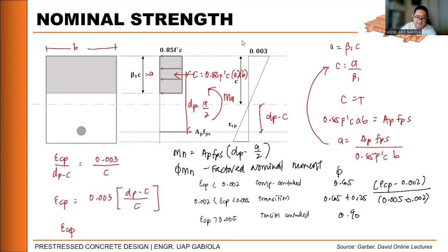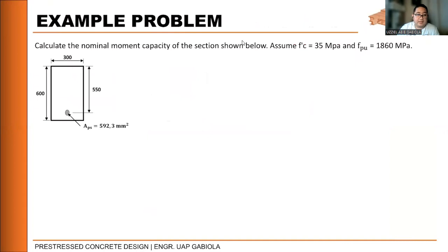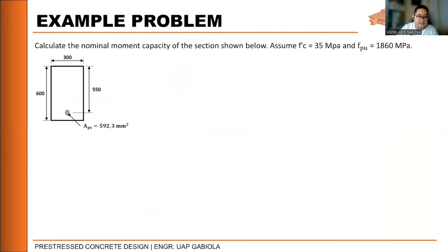Let's start Example 1: Calculate the nominal moment capacity of the section shown. Assume f'c equals 35 MPa, FPU equals 1860 MPa. The given dimensions are 300 mm by 600 mm with an area of prestressing strand of 592.3 mm² — equivalent to six one-half inch diameter strands. The distance from the center of reinforcement to the outermost compression fiber DP is 550 mm.